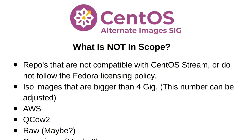QCOWs, ditto. Raws — I put maybe on there. We're not starting off with that, but if somebody wants to make a Raspberry Pi raw CentOS Stream thing and it works within the infrastructure, I'm not going to say no to it.